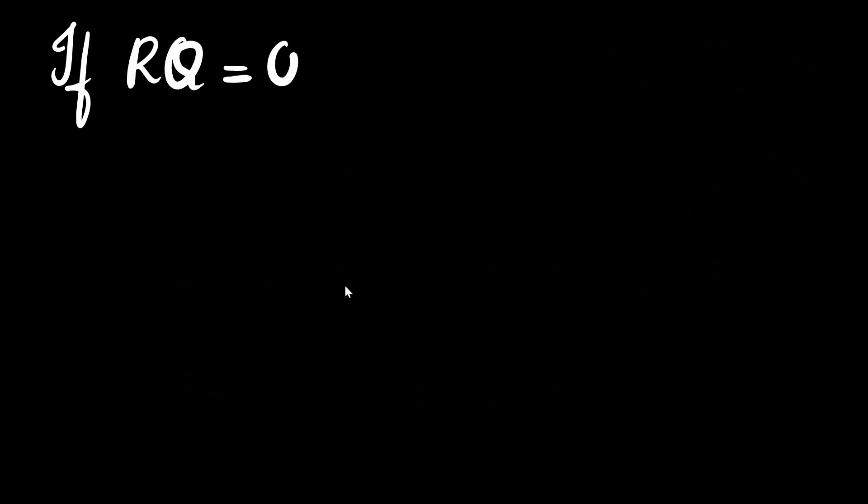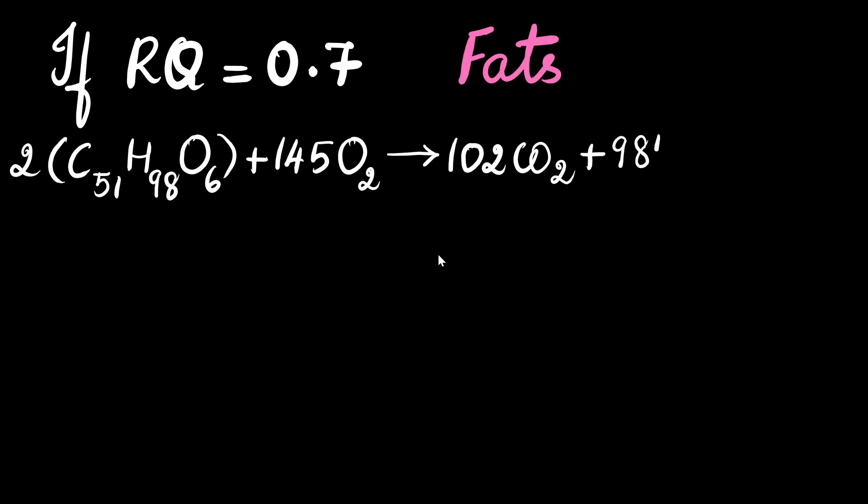Similarly, if we get an RQ value of 0.7, the usual inference is that fat is being primarily metabolized by the body. So, let's take the example of a fatty acid metabolism, say, tripalmitite. Okay, so that equation would look something like this.